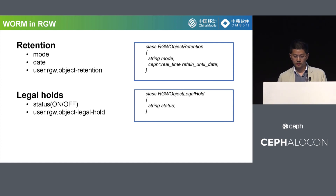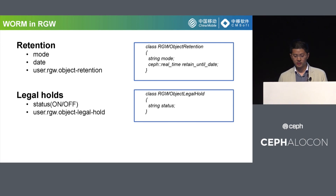With the work above, we can now support the WORM feature in SafeReduce Gateway. Other S3 features like lifecycle can work together with object lock to help users manage their data more easily.